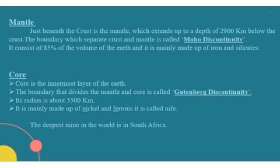The second layer is the mantle. Just beneath the crust is the mantle, which extends up to a depth of 2,900 km below the crust. The boundary which separates the crust and mantle is called the Moho discontinuity. It consists of 85% of the volume of the earth and is mainly made up of iron and silicates.